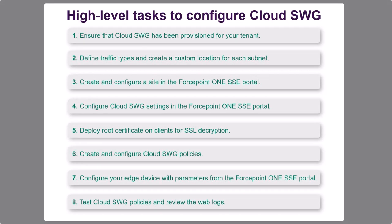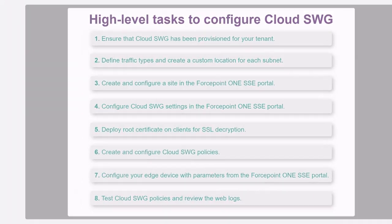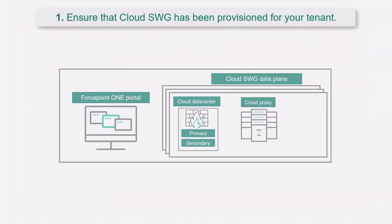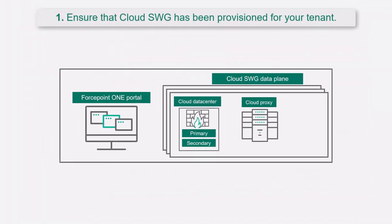Let's now review the high-level tasks you need to perform to configure a transparent proxy connection in Cloud SWG. First, ensure that Cloud SWG has been provisioned for your tenant. If necessary, contact your Forcepoint account representative.